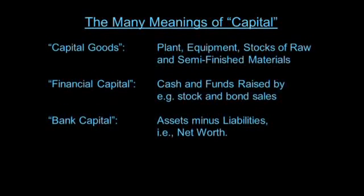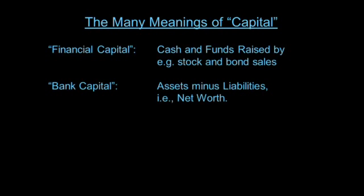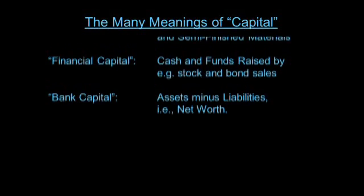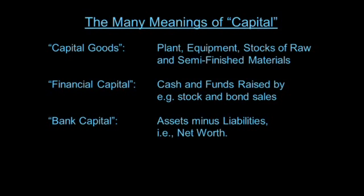Financial capital is just the cash and other funds raised by stock and bond sales. A firm's financial capital is simply the funds it has to invest and operate based on how much it's borrowed and how much stock it's sold. Capital goods — a distinction made by Böhm-Bawerk and picked up by Mises — refers to the physical goods: the plant and equipment, stocks of raw materials, and some finished materials.